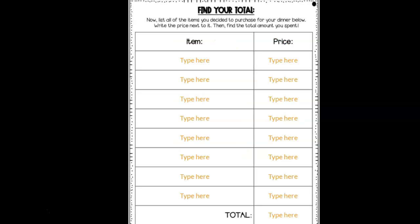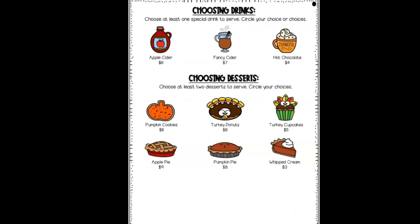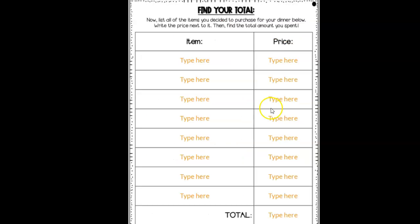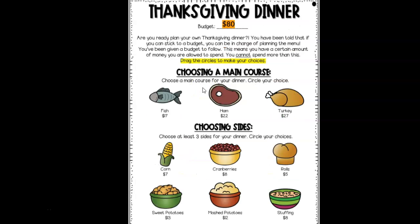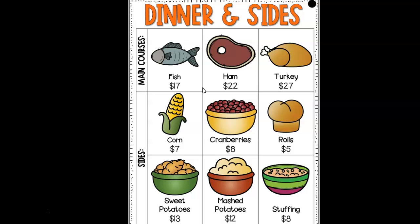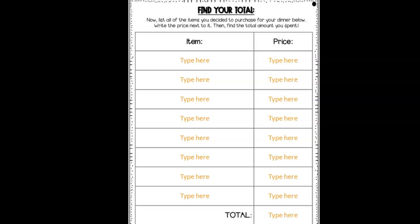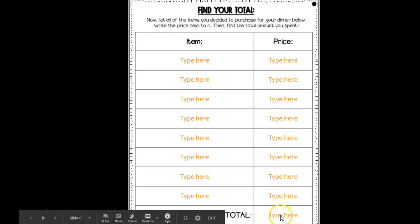Now you're going to list all the items that you decided to purchase for your dinner below, and you'll write the price next to it. You'll need to type in what you chose on this slide in the item column. To get the price, you'll have to go back a few slides to the prices — to the dinner and sides, and the drinks and dessert — and you'll record the price here. Then you'll have to add it all up and type the total here.